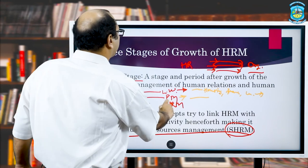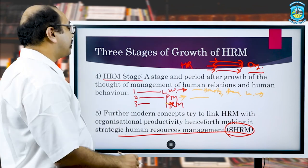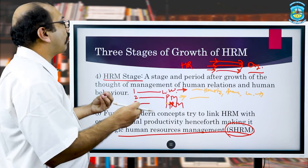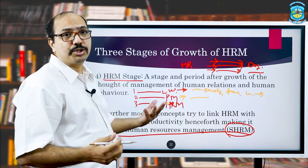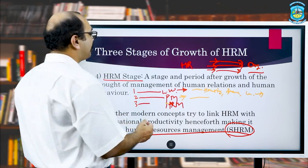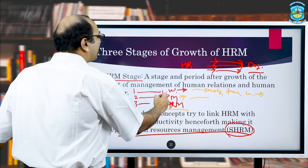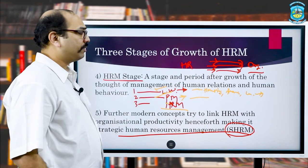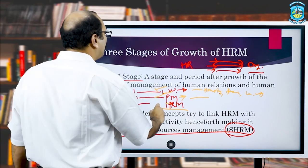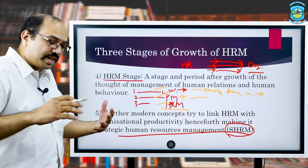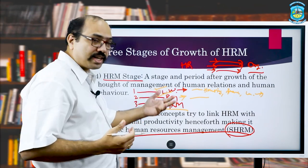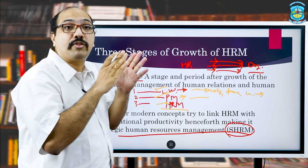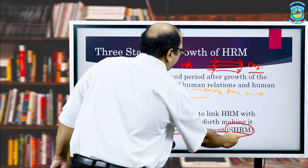Further improvement came when the services sector came into the picture. Different types of services were also covered and new practical problems emerged. While dealing with those problems, new literature got developed which is covered under human resources management. So we started with labour welfare practice, passed through personnel management, and are now in human resources management, with constant evolution still happening toward strategic human resources management.